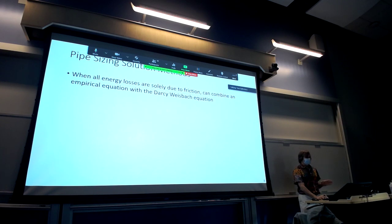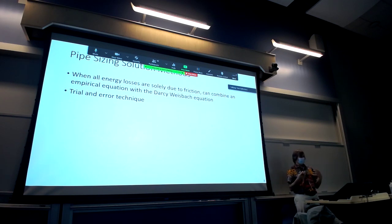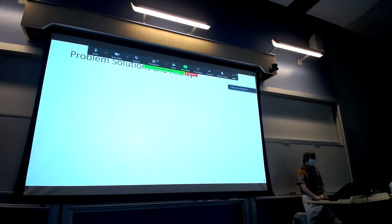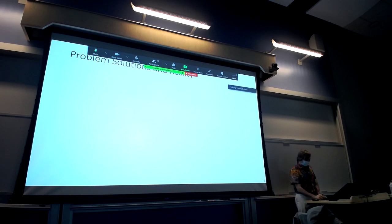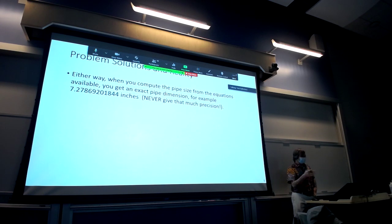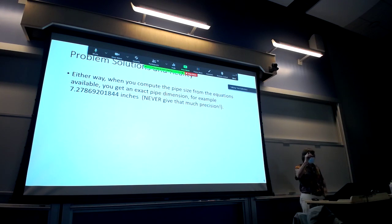That's one way to solve the pipe sizing class of problems. The other way is trial and error, which is pretty simple to set up and get solutions from, even though it is iterative. All the equations are exact, so you can calculate an exact diameter — but that's not reality, because pipes are made in standard sizes.